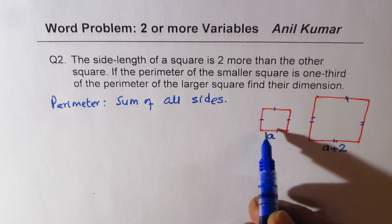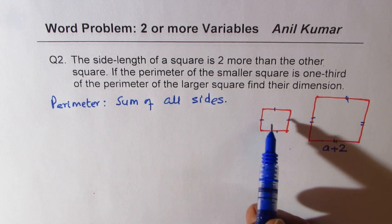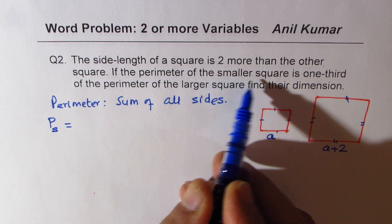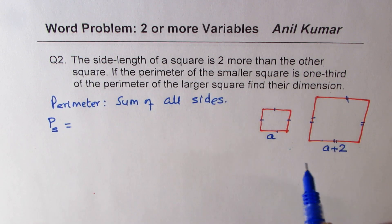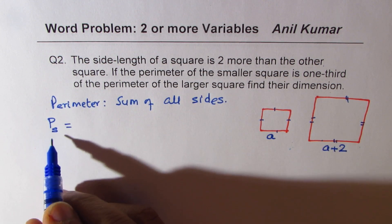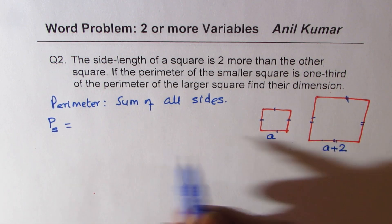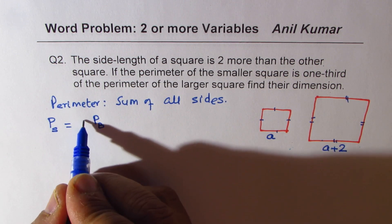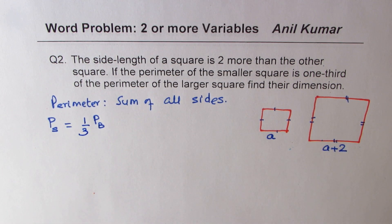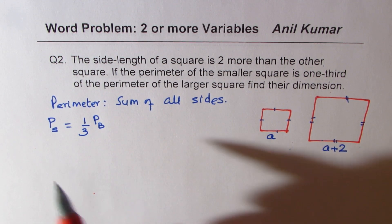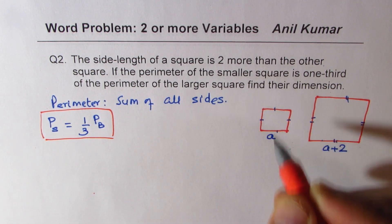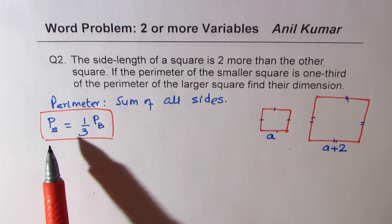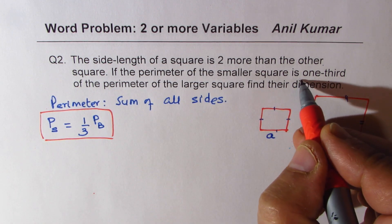We are given that the perimeter of the smaller square is one-third of the perimeter of the larger square. If the smaller perimeter is P_S and the bigger is P_big, then P_S equals one-third of P_big. So we got an equation. First step is to sketch, second is to identify variables, and we made an equation from the given condition that perimeter is one-third.